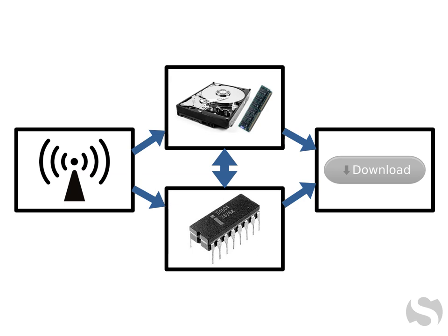The hard drive and RAM are like a mind's memory abilities. The microprocessor is akin to the mental abilities related to understanding. Memory and understanding support each other. Committing things to memory is easier if they are understood, and understanding comes easier with accessible knowledge. Attention is like mental Wi-Fi that brings information from the senses into the mind via focus or concentration.